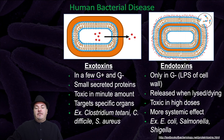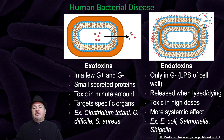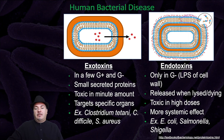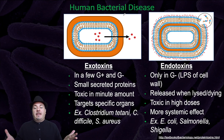In regards to human diseases bacteria can cause, there are two broad categories: exotoxins and endotoxins. Exotoxins are found in a few gram-positive and gram-negative bacteria. They're small secreted proteins — the bacteria makes a protein and releases it into the environment, in this case into the human being infected. These proteins are toxic in very minute amounts and they target specific organs. Endotoxins are found only in gram-negative bacteria because they're made up of the lipopolysaccharides of the cell walls — that outer membrane itself can be toxic to humans. We're only exposed to endotoxins when the bacterial cell is lysed or dying and broken open. These endotoxins are toxic in high doses and produce a more systemic effect, not targeting specific organs. An example of this would be Salmonella.